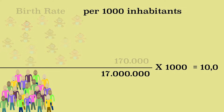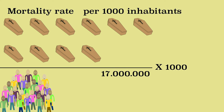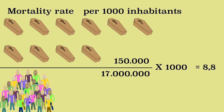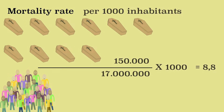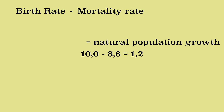The mortality rate is calculated almost in the same way, but here we divide the number of deaths by the number of inhabitants. In 2016, 150,000 people died in the Netherlands. We divide 150,000 by 17 million and multiply by 1,000, giving a mortality rate of 8.8. The natural population growth is the difference between the birth and the mortality rate: 10.0 minus 8.8 equals 1.2. The natural population growth in the Netherlands in 2016 was therefore 1.2.